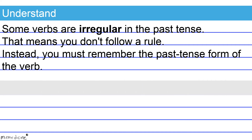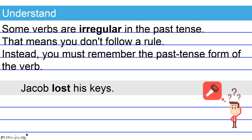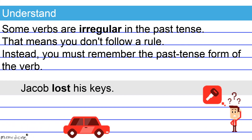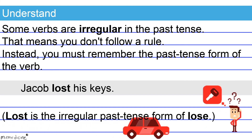Check out this example: 'Jacob lost his keys.' Lost is the irregular past tense form of the verb 'lose.' This is a correct shift and the overall sentence is formatted correctly.